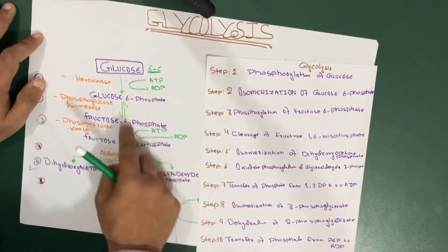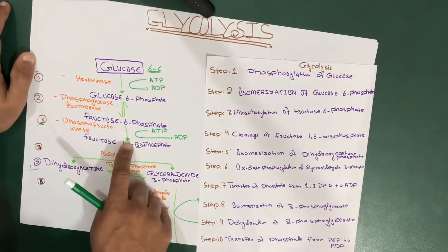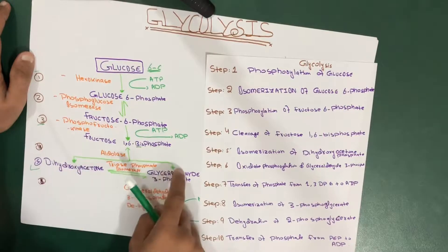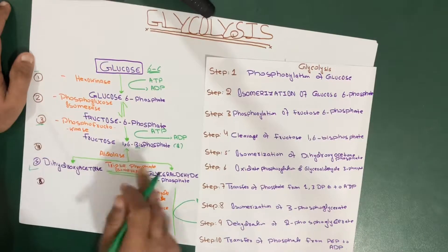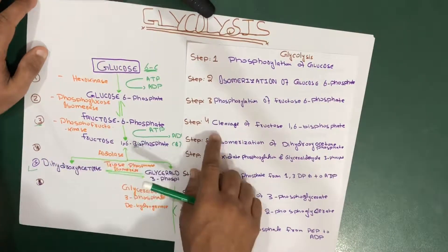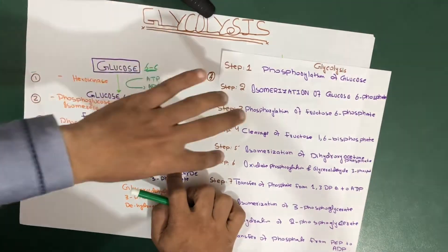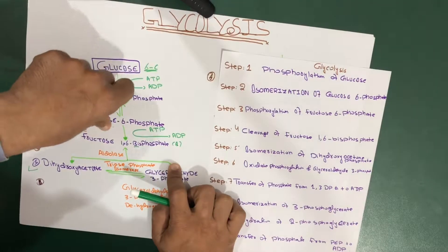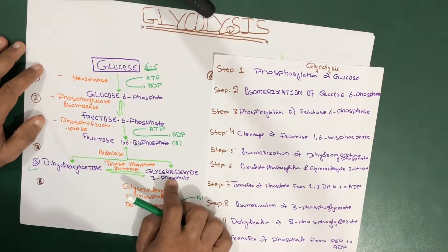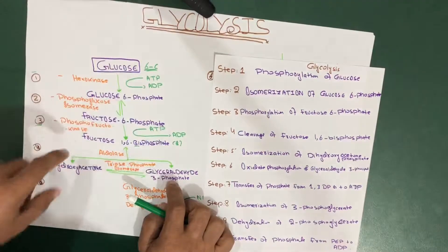Step four is the cleavage of fructose-1,6-bisphosphate. Fructose is still a six-carbon molecule, so we want to break it into two three-carbon molecules. The enzyme aldolase breaks it down into two molecules: dihydroxyacetone phosphate (DHAP) and glyceraldehyde-3-phosphate.